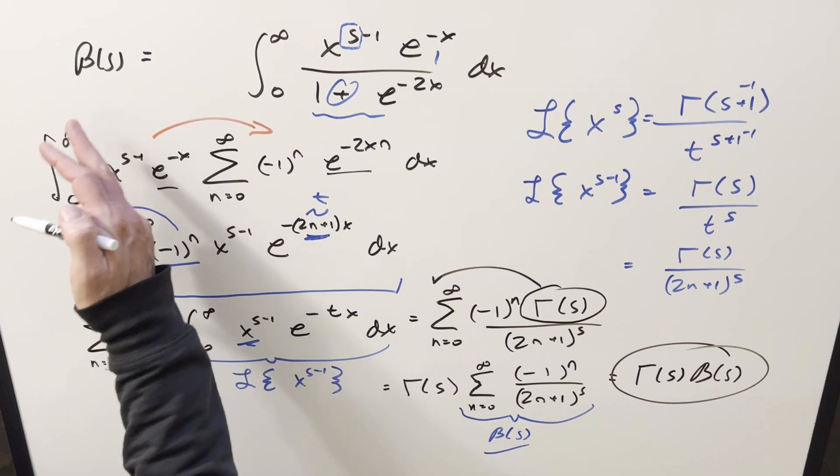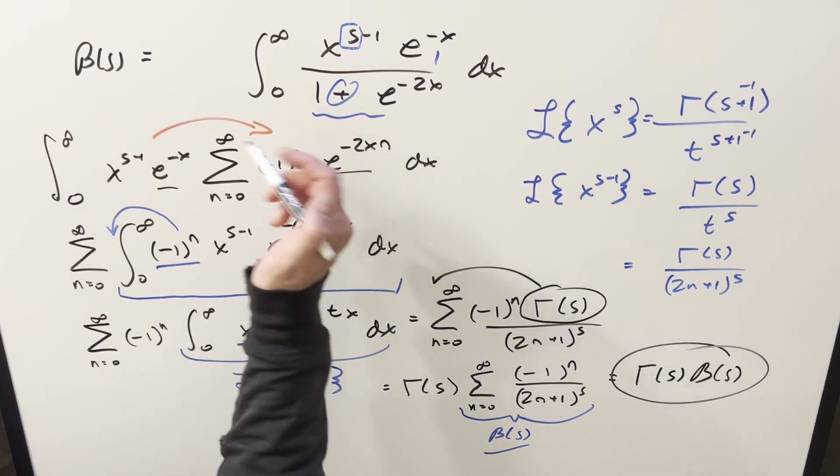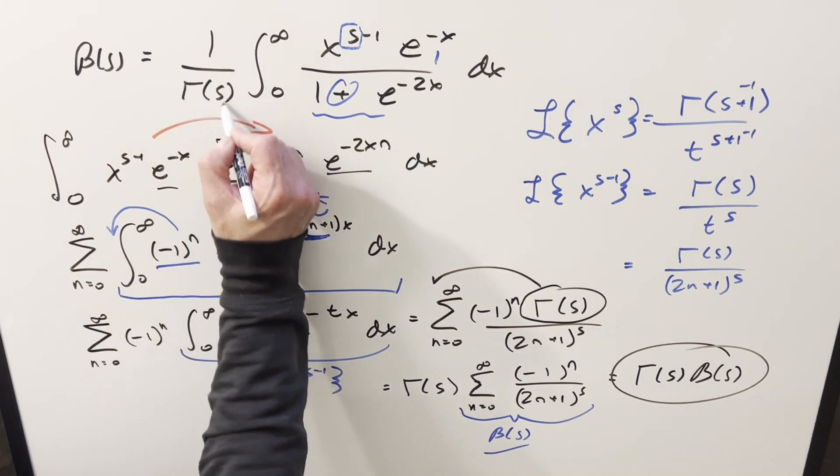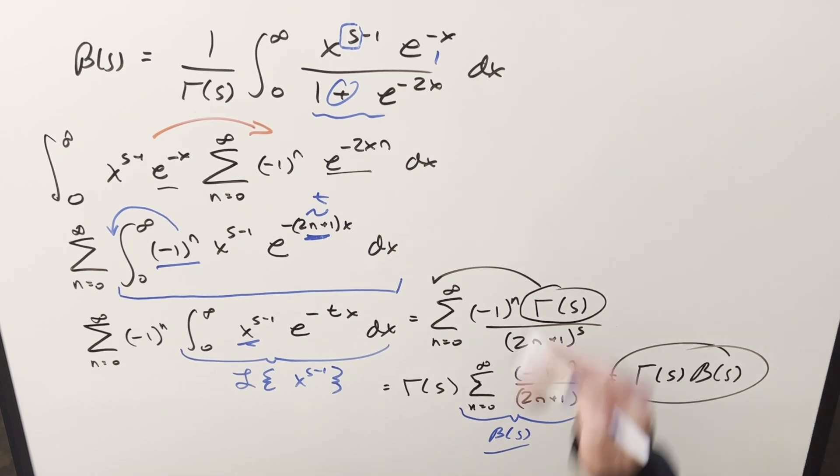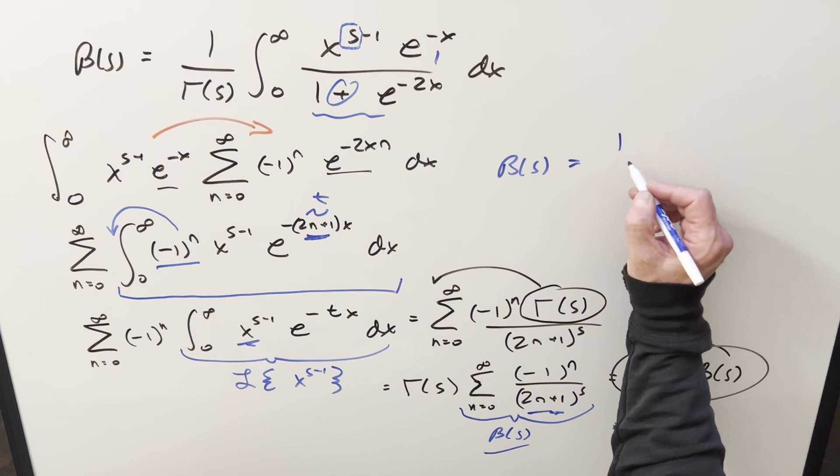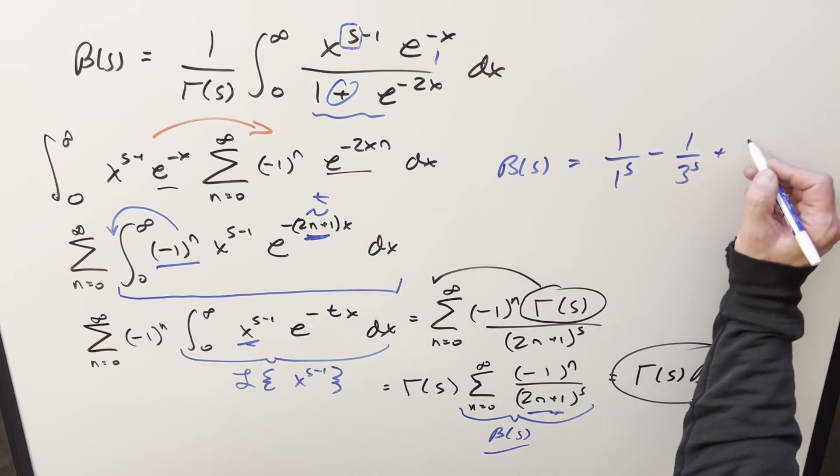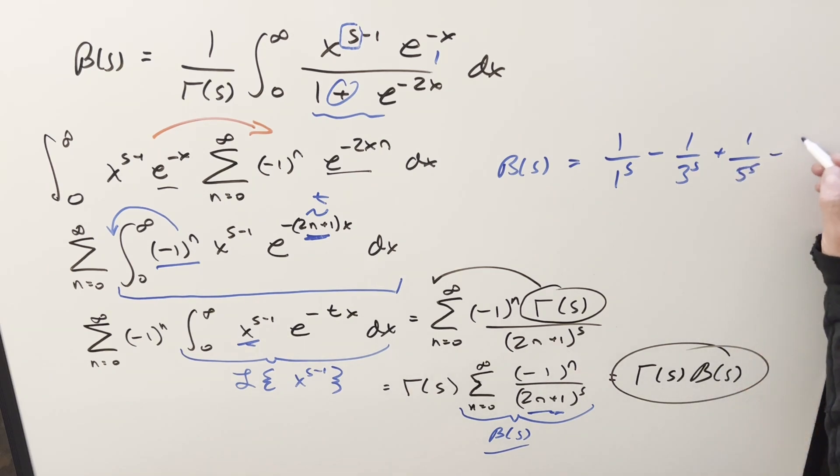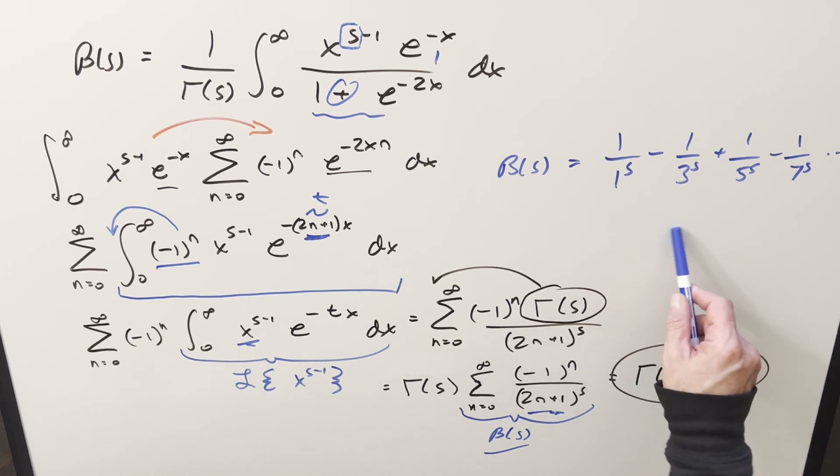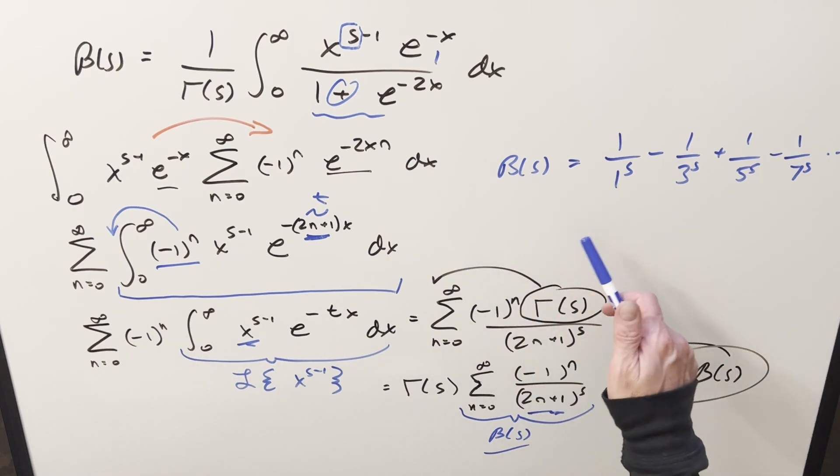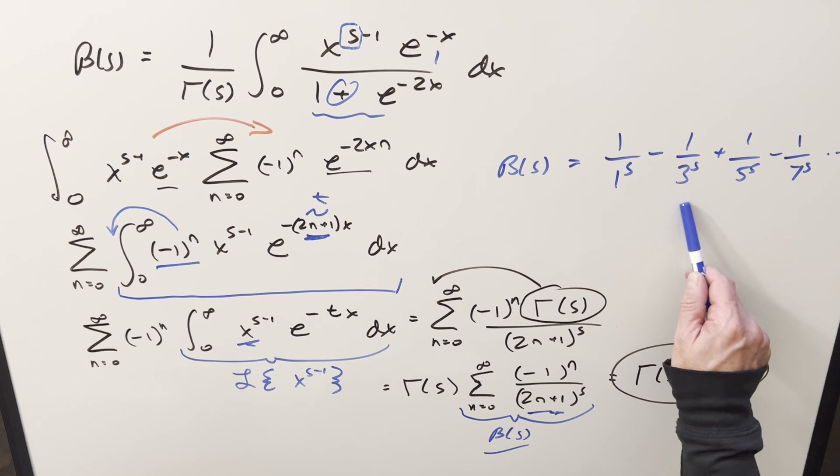If we divide off the gamma of s, we could write it as the Dirichlet beta function being this integral times just 1 over gamma of s. And so just writing out a few terms of this. Now 2n plus 1, this is always going to be an odd number. When we start at 0, this is going to be positive because minus 1 to the 0 is just 1. So it's just going to be like 1 over 1 to the s minus 1 over 3 to the s plus 1 over 5 to the s minus 1 over 7 to the s on and on to infinity. And so just notice it's really similar to the Riemann zeta function and the eta function just with alternating signs and all odd terms on it.